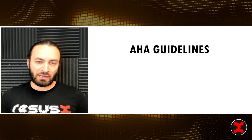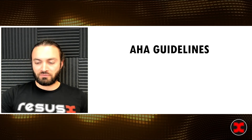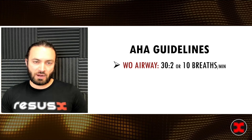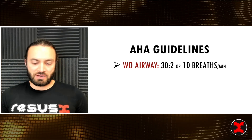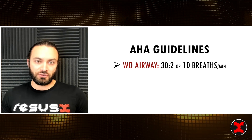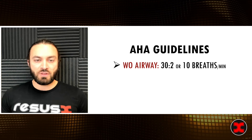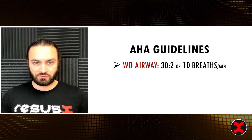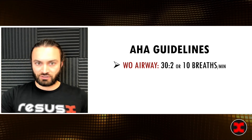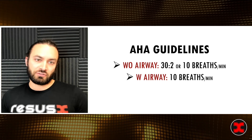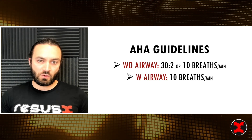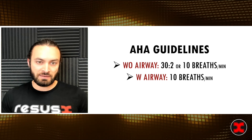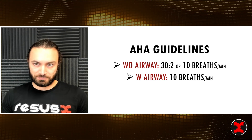There are three main components I'm going to focus on. First, without an established airway, the guidelines recommend either a 30-to-2 compression-to-ventilation ratio or 10 continuous breaths without an airway during chest compressions. Alternatively, with an airway, the AHA guidelines recommend 10 breaths per minute continuous with compressions.